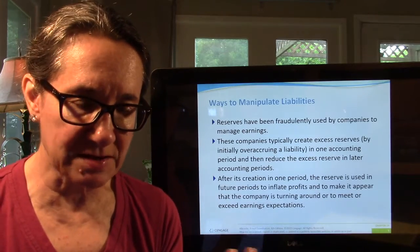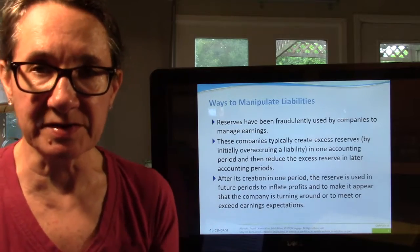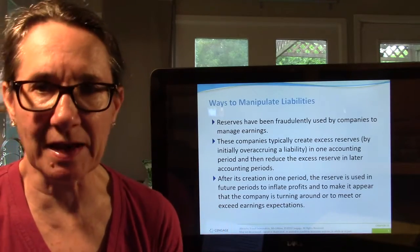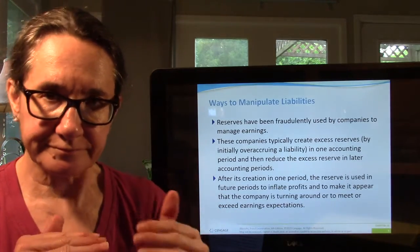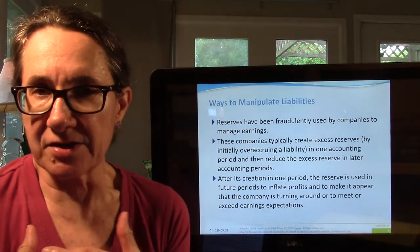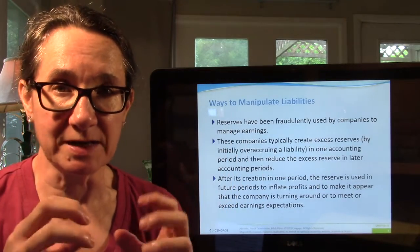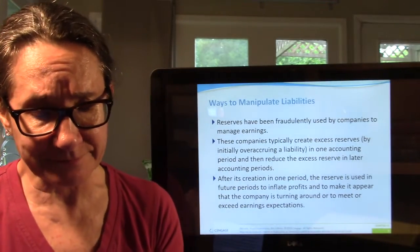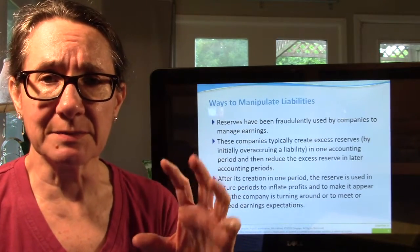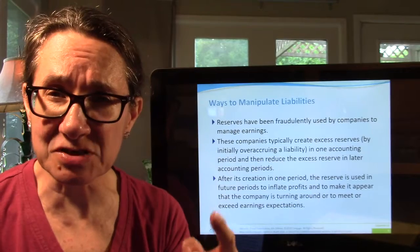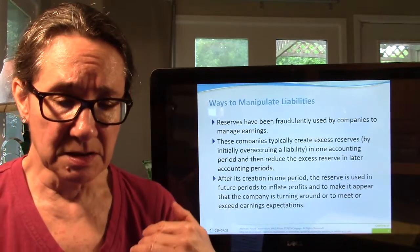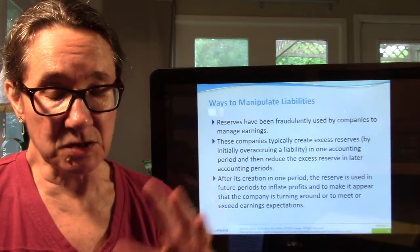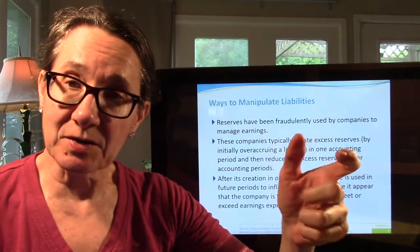Some frauds aren't net income related — sometimes they just want to say they have more assets than they do. But first we'll talk about liability fraud. You typically want to understate your liabilities, say you have fewer than you do, because liabilities you have to pay. However, liability accounts, especially contingencies like warranty reserves and allowances for bad debt, can be used to create inflated liabilities.